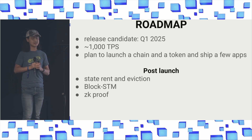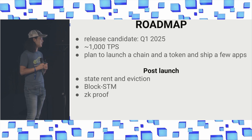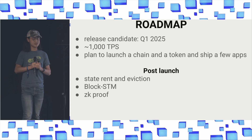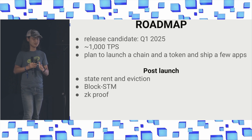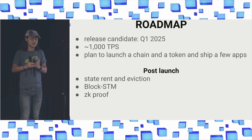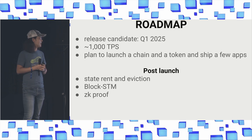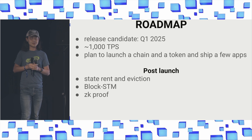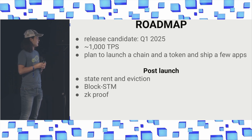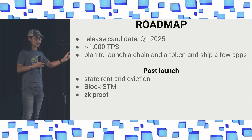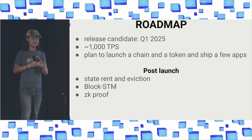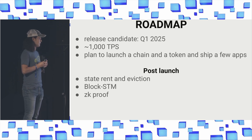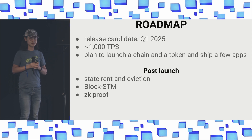Our roadmap: we're targeting a release candidate in Q1 of next year. We're focused on features rather than performance, but we expect to achieve around 1,000 TPS even without serious optimization, which is sufficient for many applications. We're going to launch a chain, have a token, and ship the first consumer apps ourselves. Post-launch, we plan to address state bloat — believed to be Ethereum's biggest scaling hurdle — add parallel processing with Block-STM, and ZK-prove our execution.